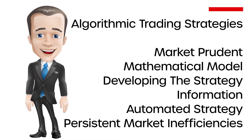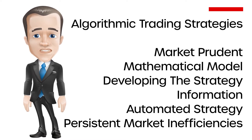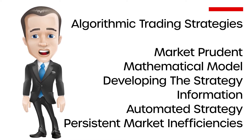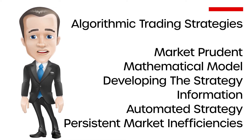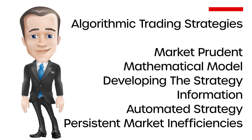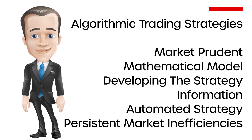Algorithmic trading strategies follow a rigid set of rules that take advantage of market behavior, and thus the occurrence of a one-time market inefficiency is not enough to build a strategy around. Further, if the cause of the market inefficiency is unidentifiable, then there will be no way to know if the success or failure of the strategy was due to chance or not.